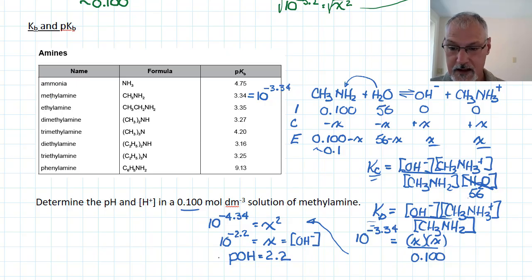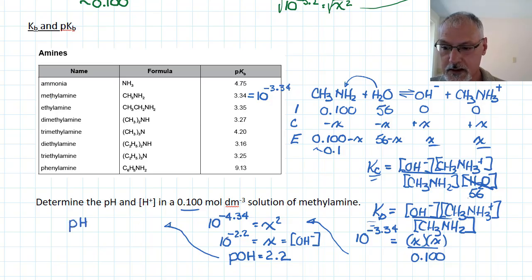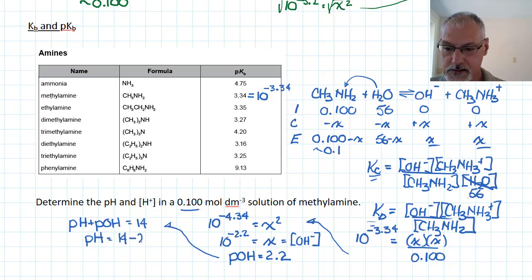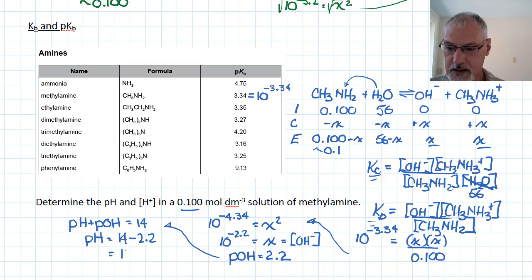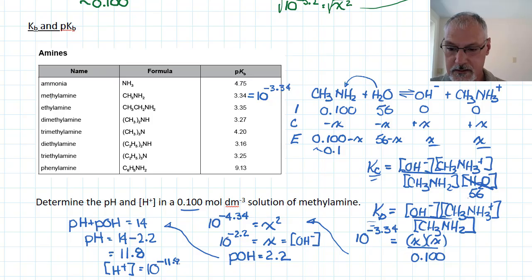Now, how do we get the pH from that? We can go back to the relationship developed in the previous program: pH plus pOH equals 14. So then pH would be 14 minus 2.2, which gives a pH of around 11.8. This means the concentration of the H+ ion would be 10 to the negative 11.8 — considerably smaller than the concentration of my OH- ion. So we can see here why this solution would be basic.